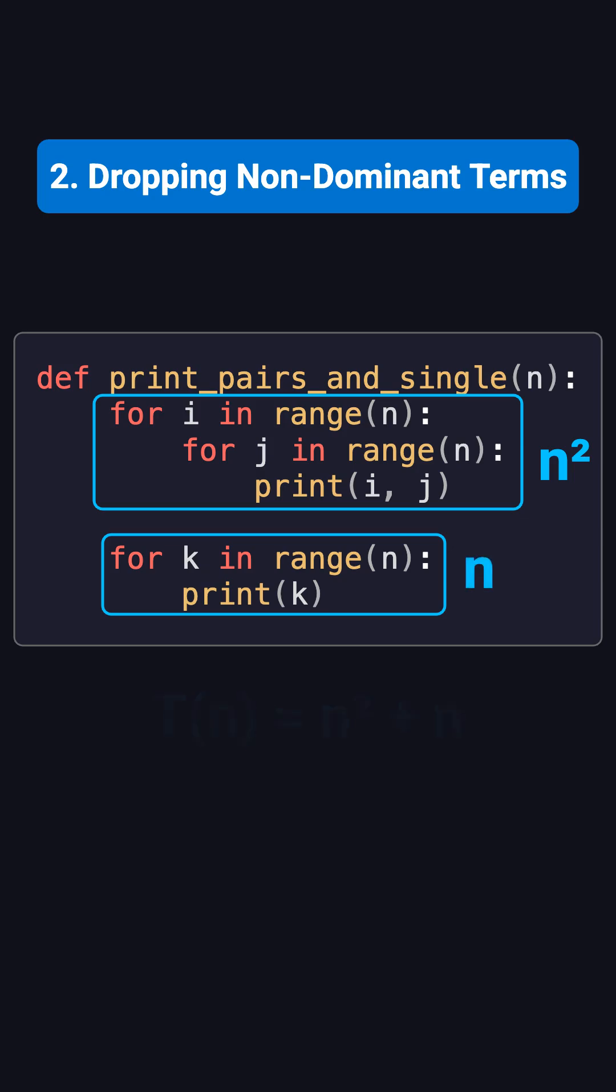So the total number of operations can be written as T(n) equals n squared plus n. In Big O notation, we only keep the term that grows fastest, which is the dominant term n squared. The smaller, non-dominant term n can be dropped. So we say the Big O of this algorithm is Big O of n squared.